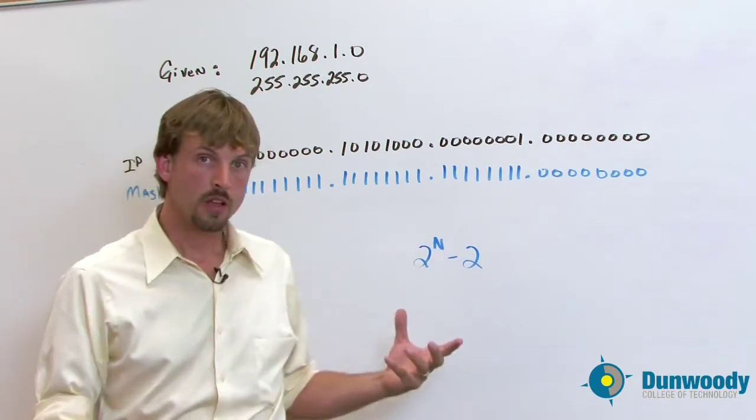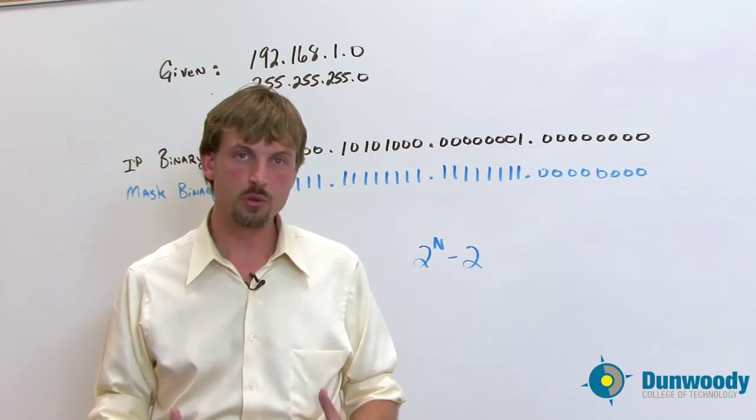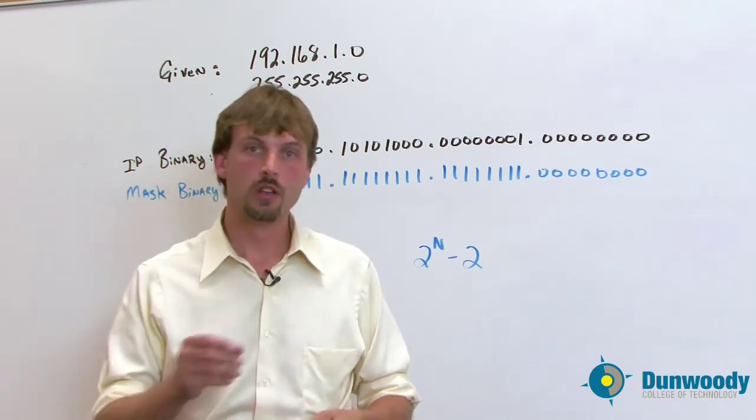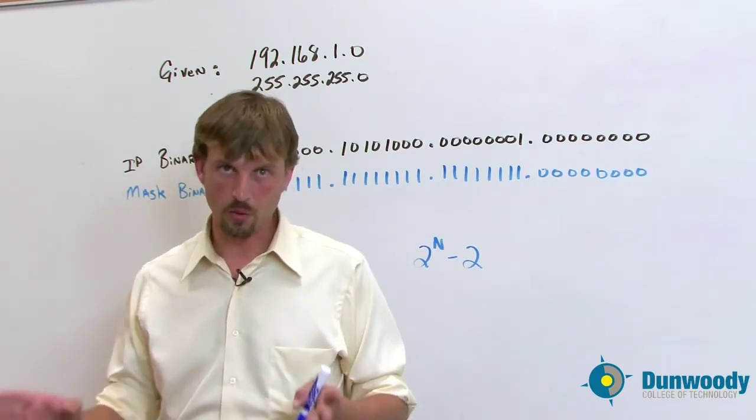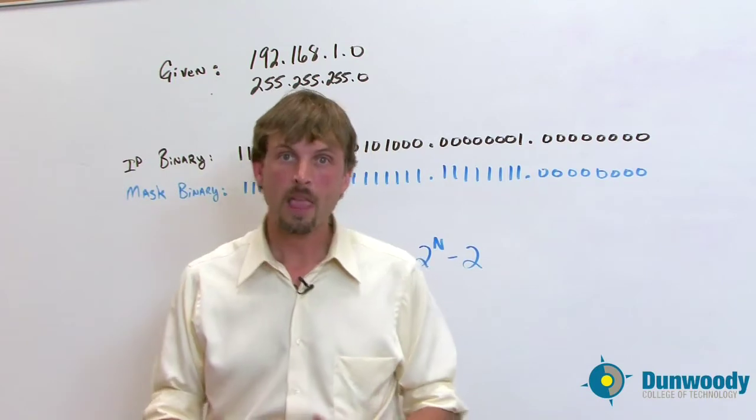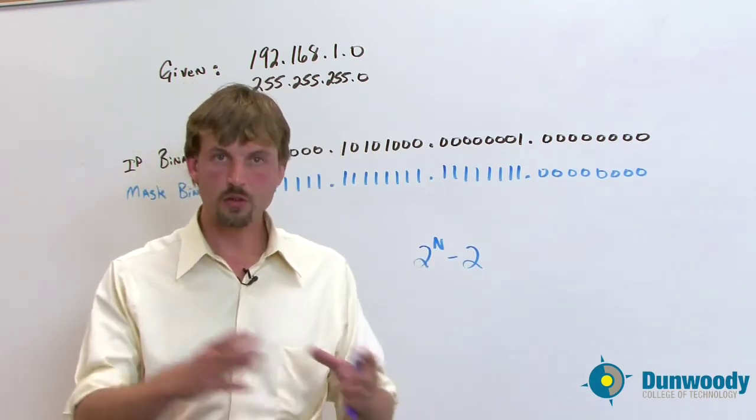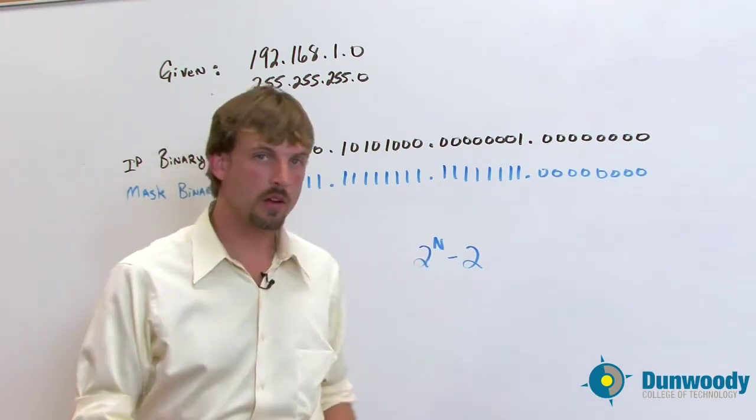So you do 2 to the 1 equals 2, 2 to the 2 equals 4, and so on and so on until you get all the way up to 2 to the 16. And that will help you solve the equation a whole lot faster because all you have to do is cross reference over to that grid and you can figure out what that N value is going to be pretty quickly.